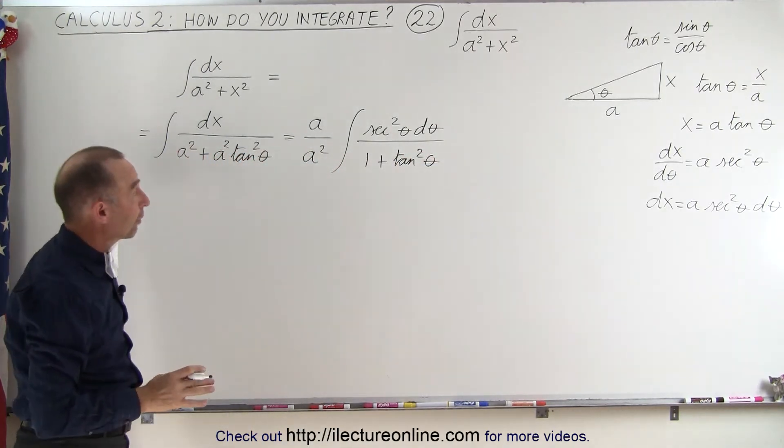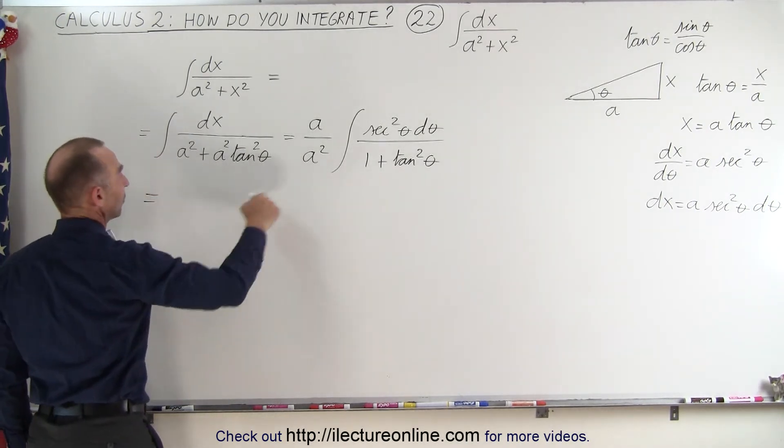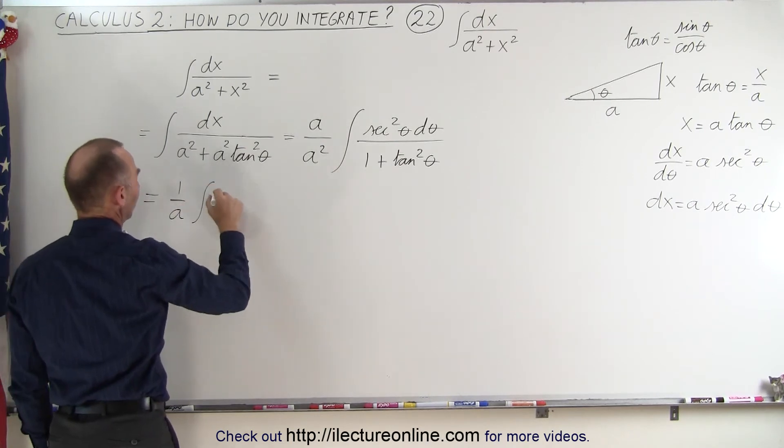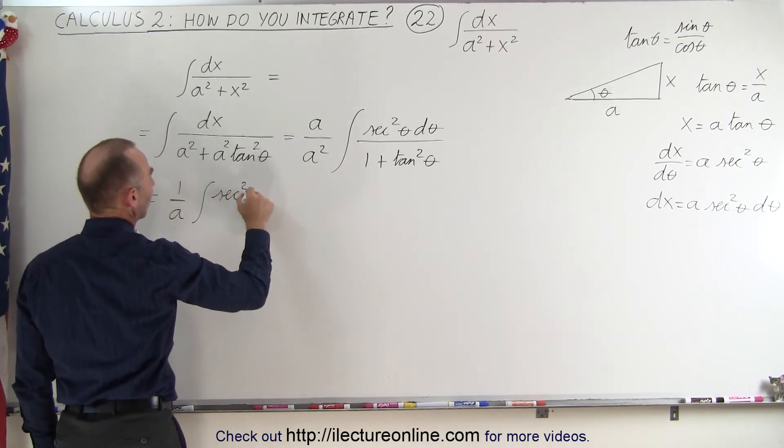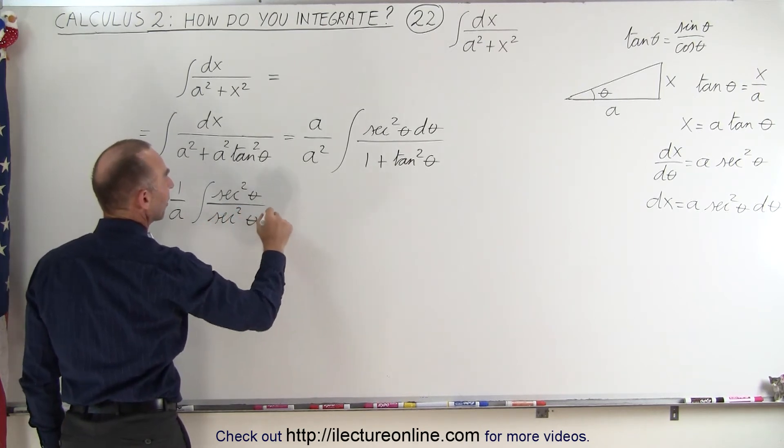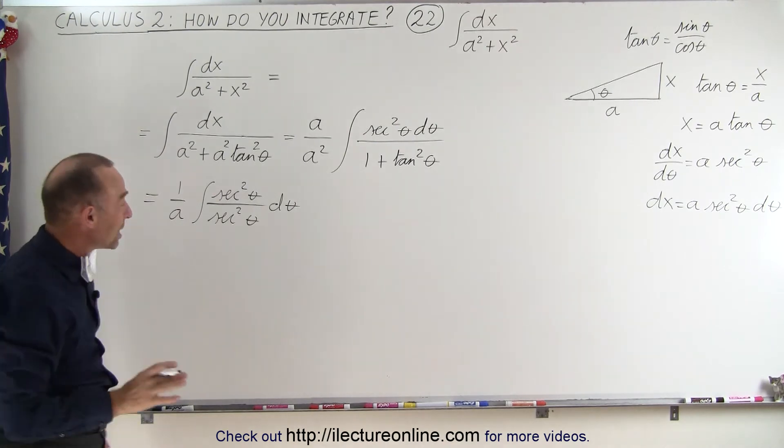Now 1 + tan²θ is actually equal to sec²θ. So this becomes equal to - and we can simplify this as being 1/a times the integral of - we get sec²θ in the numerator and sec²θ in the denominator times dθ. And notice all of a sudden it becomes a really easy integral.